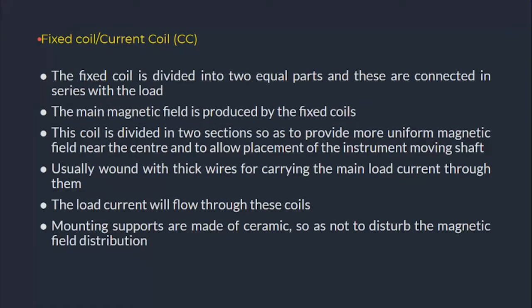The fixed coil, or current coil, is divided into two equal parts connected in series with the load. The main magnetic field is produced by these coils, which are divided into two sections to provide a more uniform magnetic field and to allow placement of the instrument moving shaft. These fixed coils are wound with thick wires for carrying the main load current, and their supports are made of ceramic so as not to disturb the magnetic field distribution. That is why it is also called the current coil.